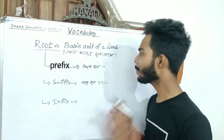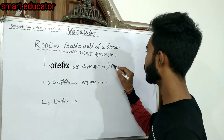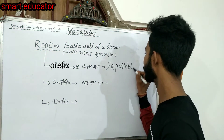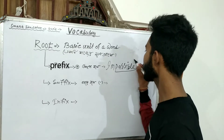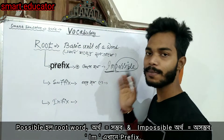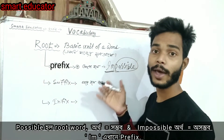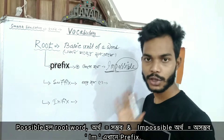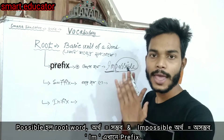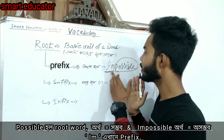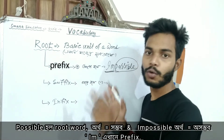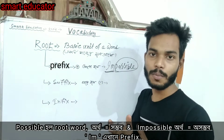Let's look at an example. The word 'impossible' — if 'possible' is the root word, then 'im' is added before it. So 'im' added to 'possible' makes 'impossible.' This addition before the root is called a prefix.